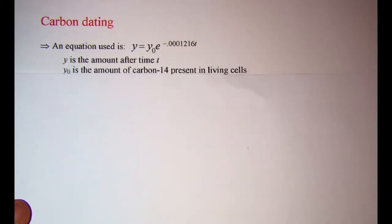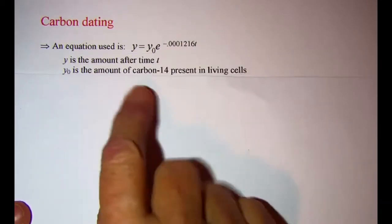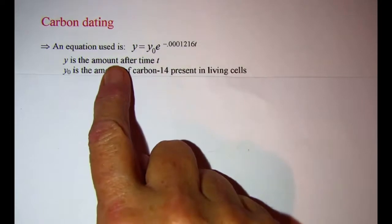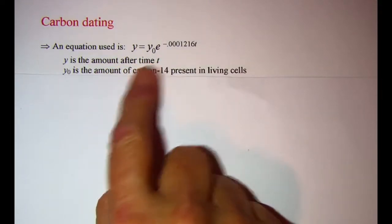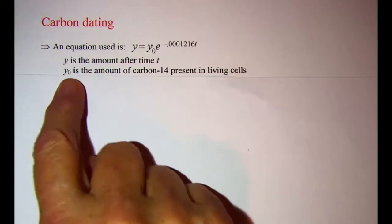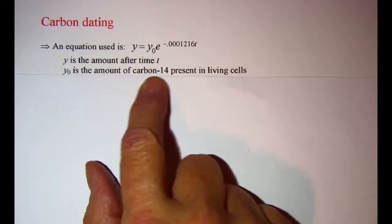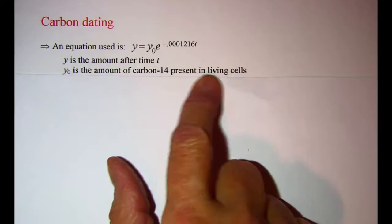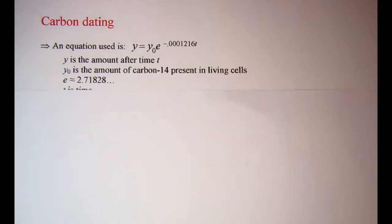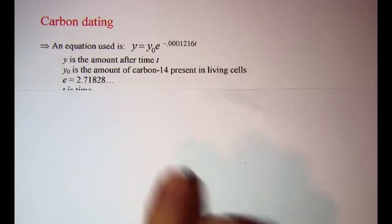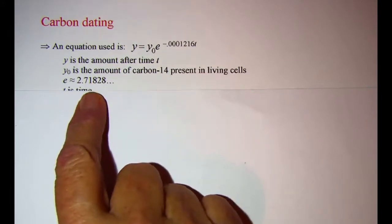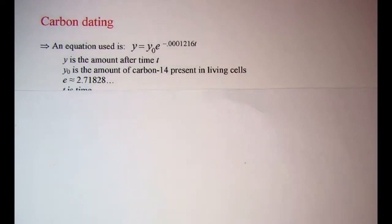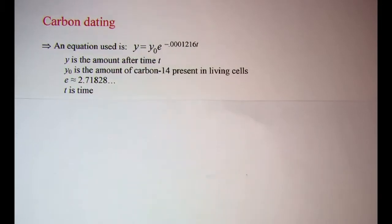The y in the formula represents the amount of carbon-14 after some time t, the y sub zero is the amount of carbon-14 present in living cells, e is the irrational number approximately equal to 2.718 and t is the time.